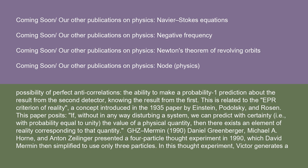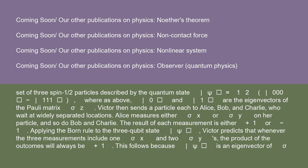Daniel Greenberger, Michael Horne, and Anton Zeilinger presented a four-particle thought experiment in 1990, which David Mermin then simplified to use only three particles. Victor generates a set of three spin-1/2 particles described by the quantum state ψ = (1/√2)(|000⟩ − |111⟩), where |0⟩ and |1⟩ are the eigenvectors of the Pauli matrix σz. Victor then sends a particle each to Alice, Bob, and Charlie, who wait at widely separated locations. Alice measures either σx or σy on her particle, and so do Bob and Charlie; the result of each measurement is either plus one or minus one.